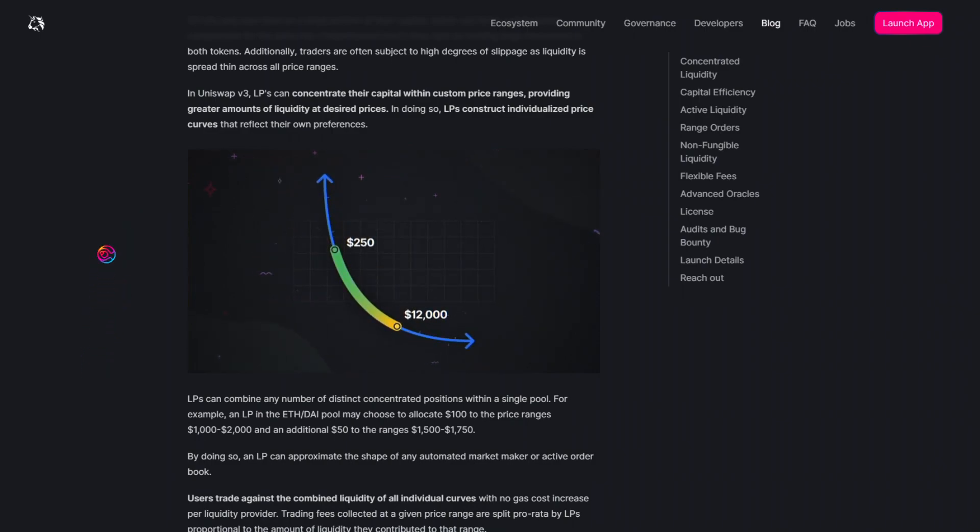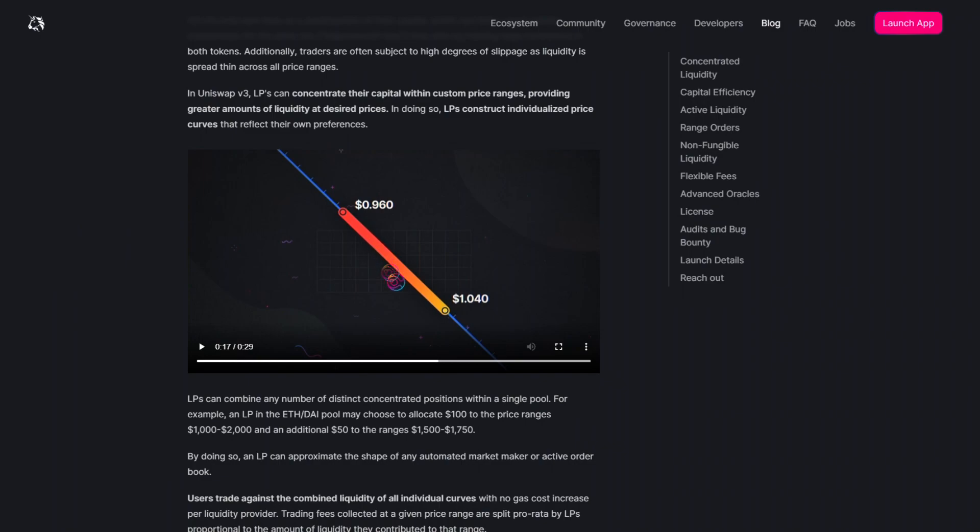Instead of all liquidity within a liquidity pool being stretched to cover all price ranges from 0 to infinity, Uniswap V3 liquidity providers must choose a specific, individual price range for where they want their liquidity to be utilized. The result is a concentration of liquidity within the price ranges where most of the trading activity actually occurs.